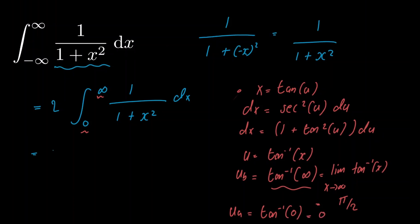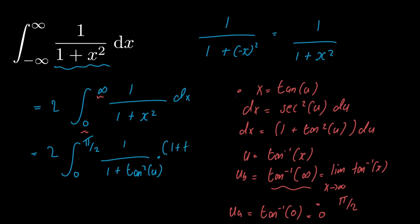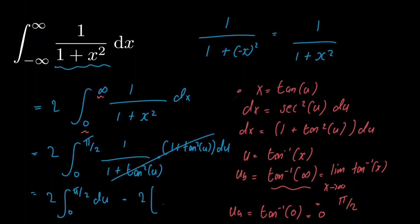So we now have 2 multiplied by the integral from 0 to π/2 of 1 divided by 1 plus tangent squared of u, multiplied by 1 plus tangent squared of u du. These two cancel and we're just left with 2 multiplied by the integral from 0 to π/2 du. We integrate this and get 2 multiplied by u evaluated from 0 to π/2, which is just equal to π. That's the final answer for the first solution.